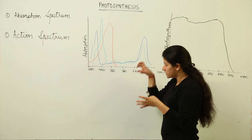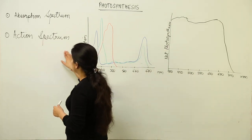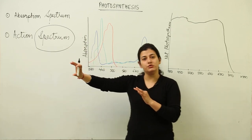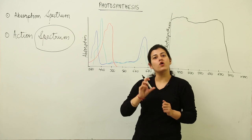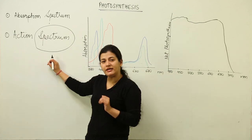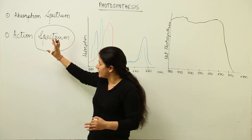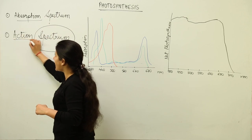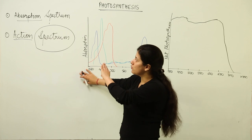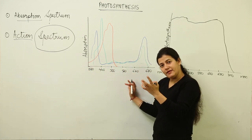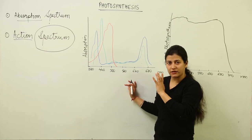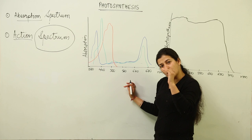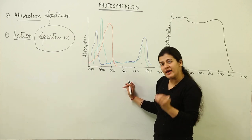First is 'spectrum.' Whenever this word comes, keep in mind that you are dealing with white light, which can be broken down into different wavelengths, and those different wavelengths correspond to different colors. So when we are dealing with those different wavelengths of white light, we are dealing with a spectrum. Now the other words are 'absorption' and 'action.' Let's see what absorption spectrum has to say. As the name suggests, there would be absorption of something — and because it is dealing with white light and different wavelengths, we are talking about the absorption of different wavelengths of white light by a surface.